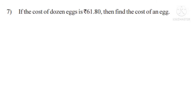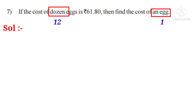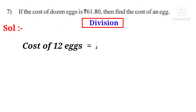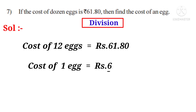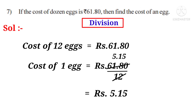Seventh problem: If the cost of a dozen eggs is 61.85, then find the cost of one egg. Solution: Dozen means 12, and an egg means 1 egg. The number of eggs decreased from 12 to 1, so the operation is division. Cost of 12 eggs is 61.85. Cost of 1 egg equals 61.85 by 12. On simplification by 12, the answer is 5.15, which is the cost of 1 egg.